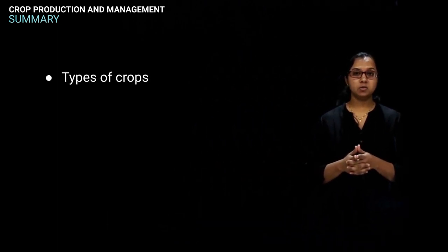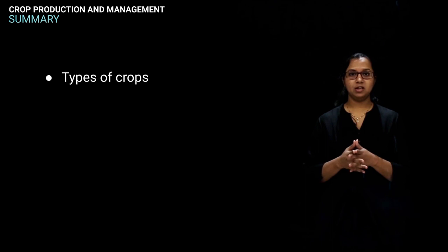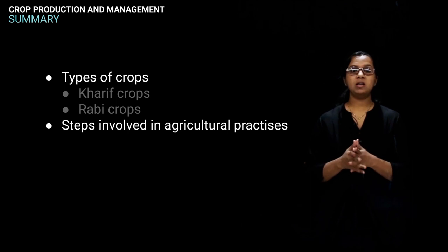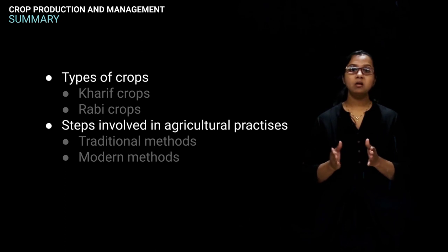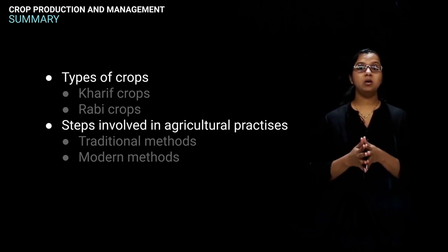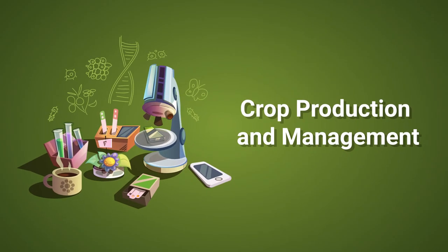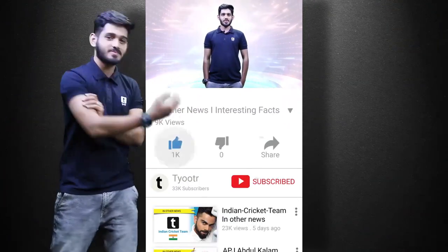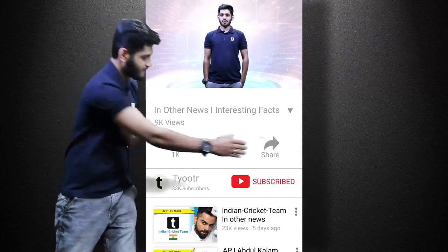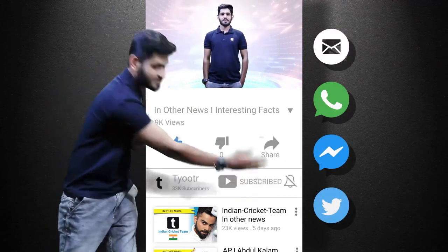In summary, we studied different patterns of crops depending on their season — kharif crops and rabi crops — with their examples. We also covered the different steps involved in agricultural practices, including traditional methods and modern methodologies, and a brief account of animal husbandry. Thanks for watching — drop a like if you enjoyed it, share it with your friends, and don't forget to subscribe.